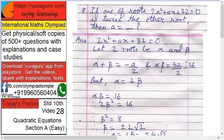The equation is 2x² + ax + 32 = 0. Let the two roots be alpha and beta. So alpha plus beta equals minus a upon two.